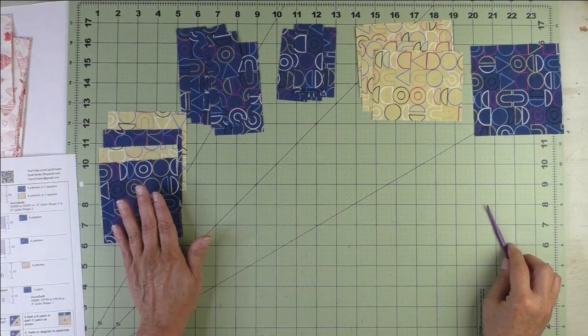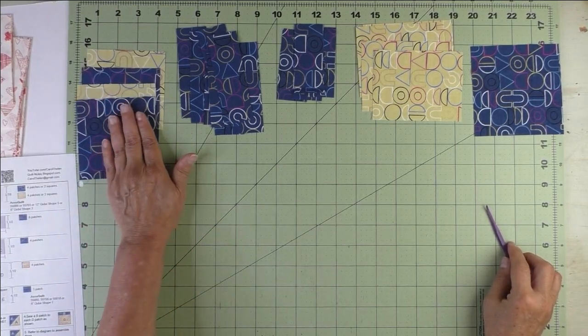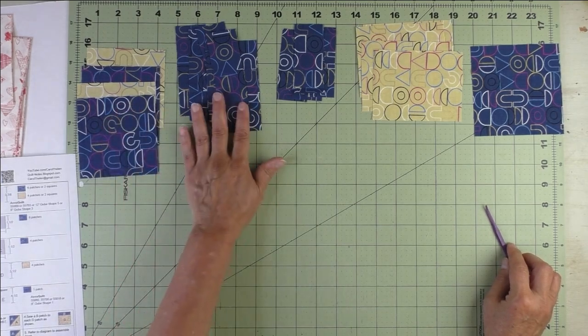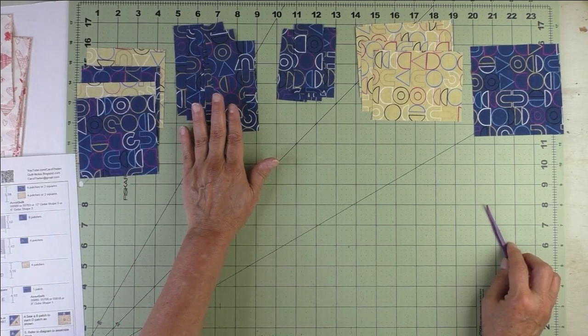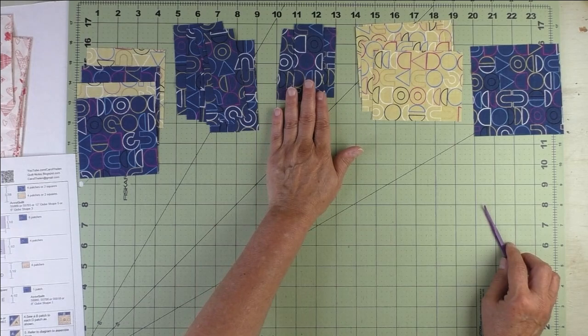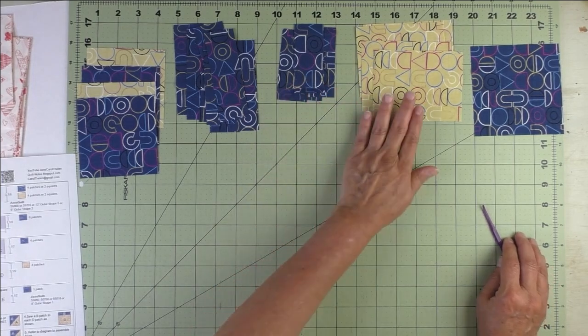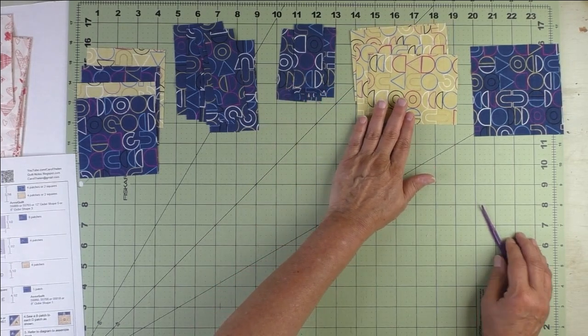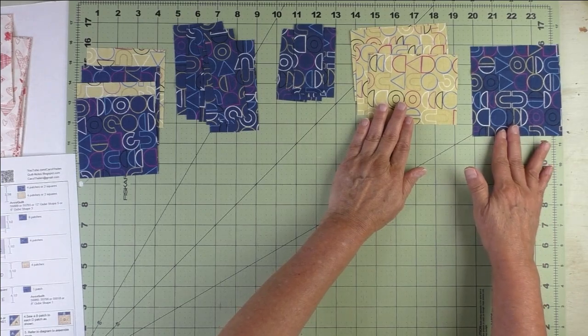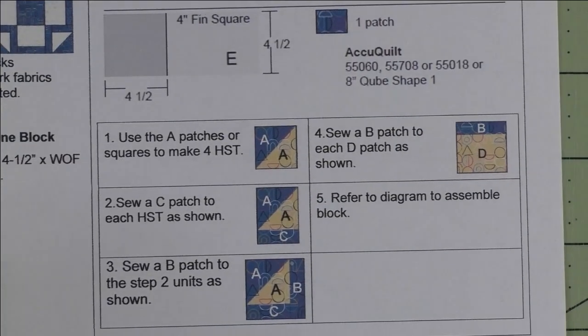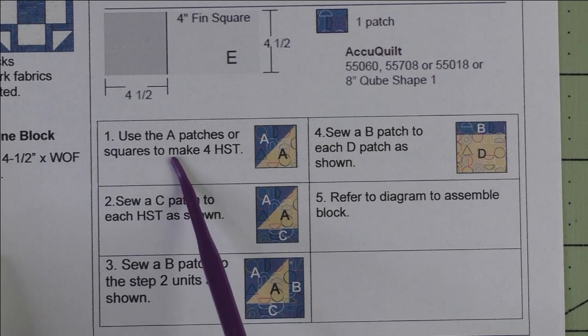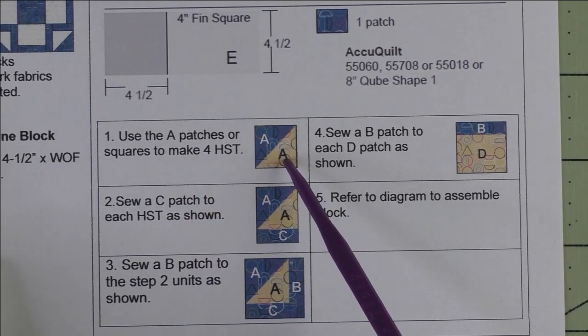This is patch A for our half square triangles. This is patch B, and these are for the little frames. Patch C is for the little frames, and this is patch D. Patch E is the center square. So the first thing we'll do is use patch A and make four half square triangles.